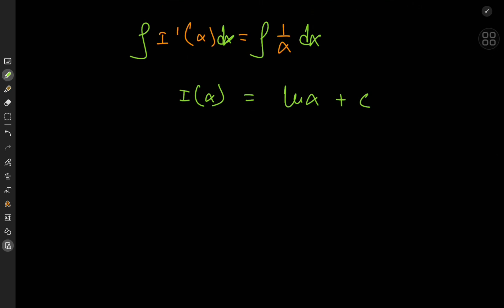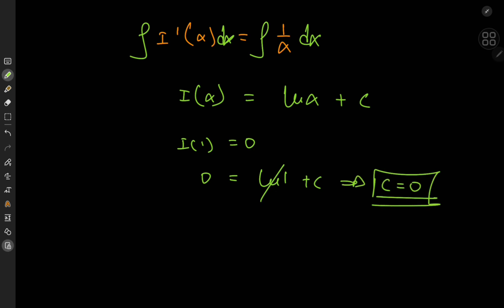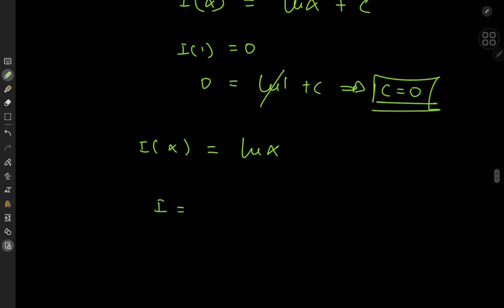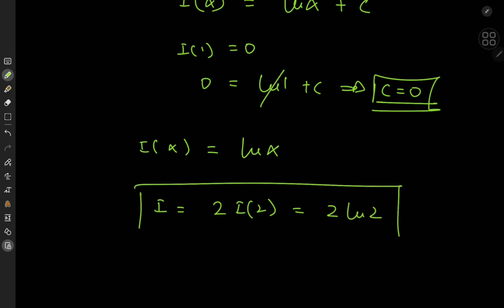Now to get rid of this constant of integration using the initial value condition we had. Recall that I(1) = 0, so we have 0 equal to log 1 plus c, and log 1 is 0, implying that c equals 0. So I of alpha equals log alpha. In our target case, the target integral was twice I at 2, which means it equals 2 times log 2.